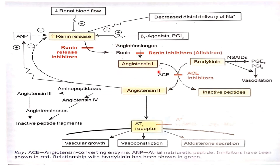Angiotensin 1 is biologically inactive, but it converts into angiotensin 2. Angiotensin 2 acts on angiotensin receptors present at the vascular smooth muscle as well as myocardium. It causes vasoconstriction, aldosterone secretion, and increases epinephrine and norepinephrine at nerve endings, ultimately increasing blood pressure.